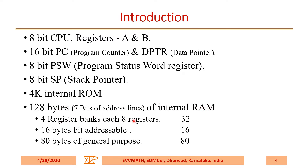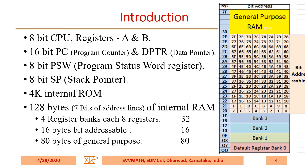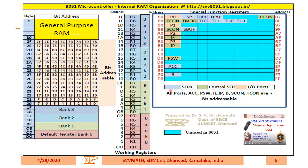It has 4 register banks, each with 8 registers, a 16-bit addressable area, and 80 bytes of general-purpose area. This is how the complete memory looks. A separate video about memory organization of the 8051 microcontroller is uploaded on my channel — you can go through it.